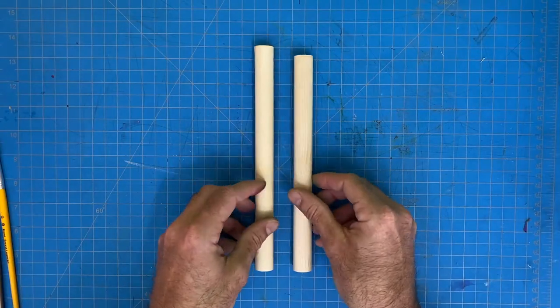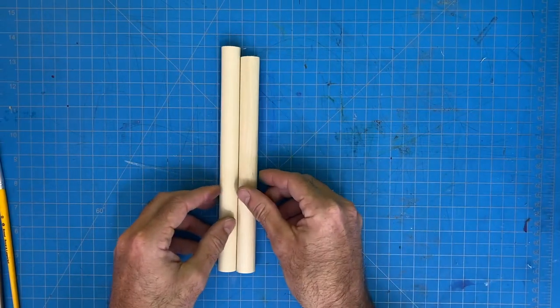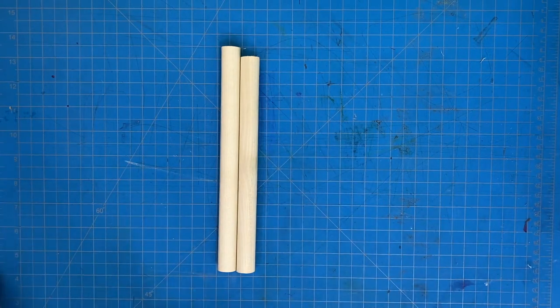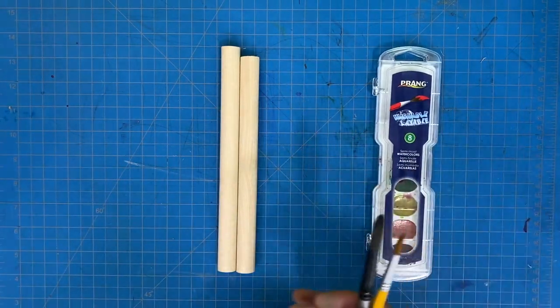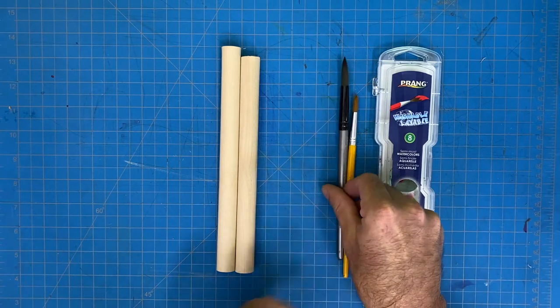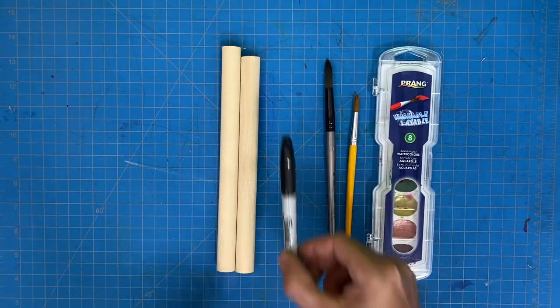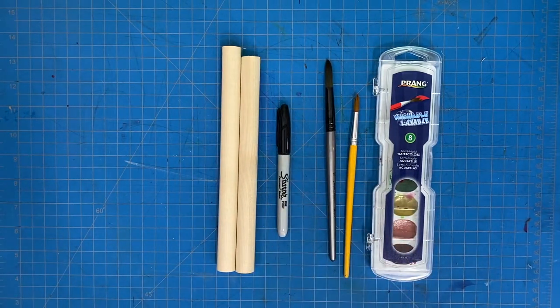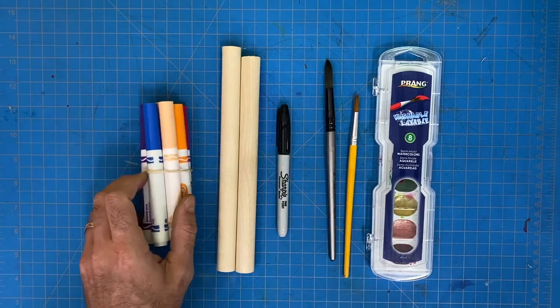You need your two wooden dowels that will be your claves, your watercolor set, two brushes, a sharpie, and your Crayola markers.